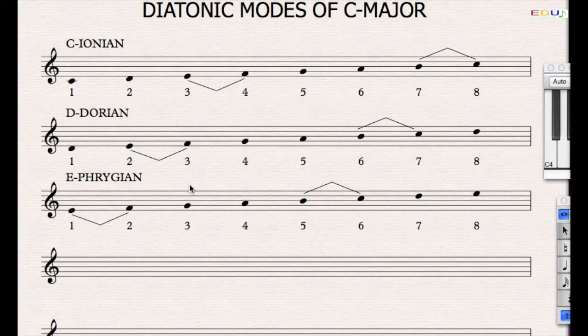So let's carry on. Which scale do we get if we go from F to F? We see that when we shift the C Ionian scale to the starting note F and the finishing note F, we get the semitone steps between 4 and 5 and 7 and 8. This scale would be called F Lydian.